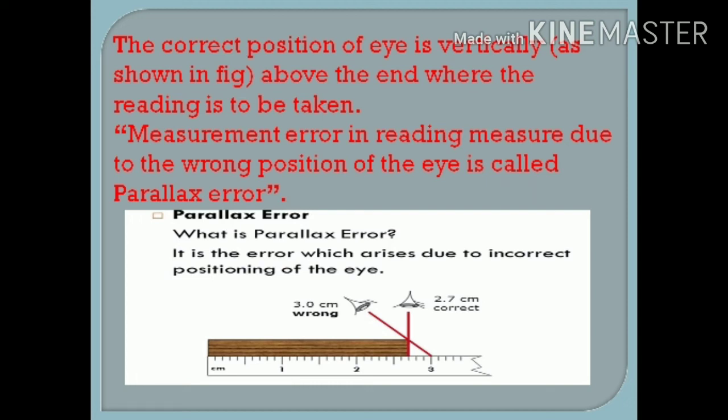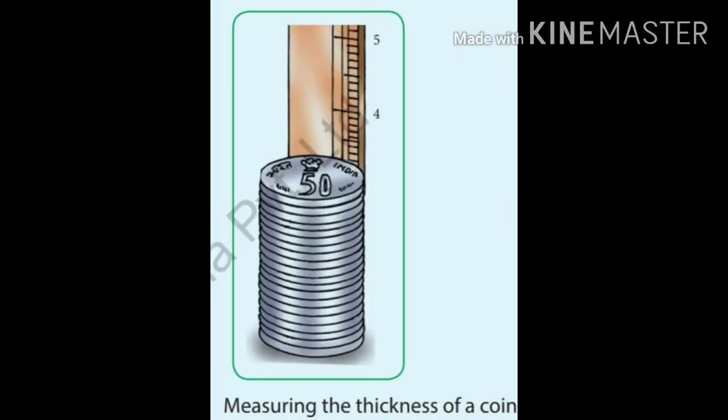Now if we want to measure the thickness of a coin, how will we find this? Take some identical coins, say 20 to 25 in numbers, and place them one over the other. All these coins will make a cylindrical column. The height of this stack of coins can easily be measured by a ruler placed vertically against it.